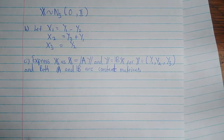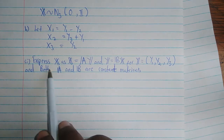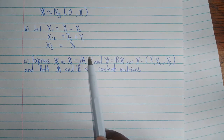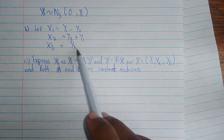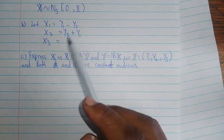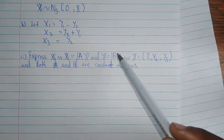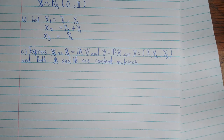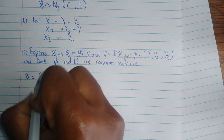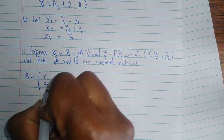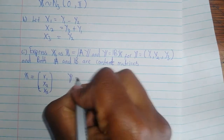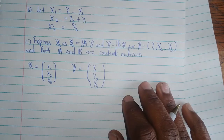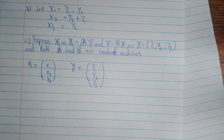Now on Part B, we are given this condition and asked to express x as x equals Ay. This basically means that the coefficients of y in the expression for x form matrix A. And if we express y in terms of x, the coefficients of x will be equal to matrix B. So we know x is the vector (x1, x2, x3) and y is the vector (y1, y2, y3). We need to find A.